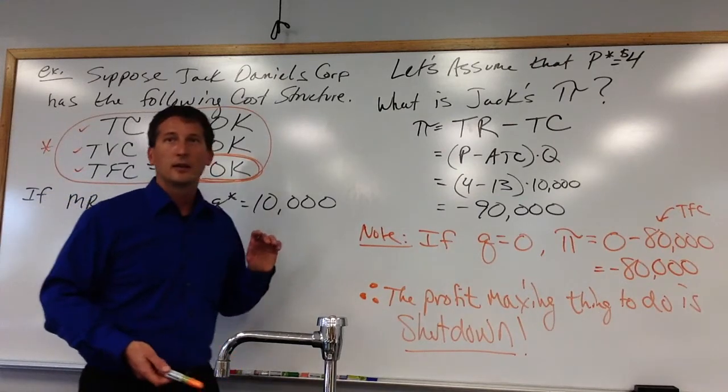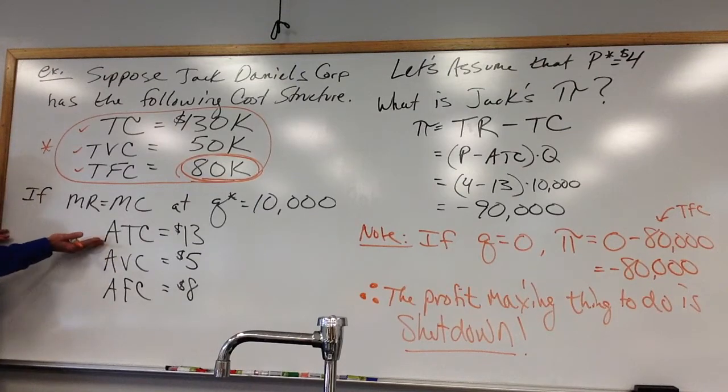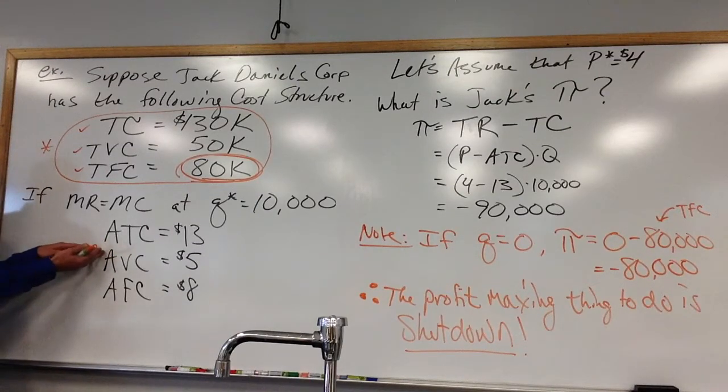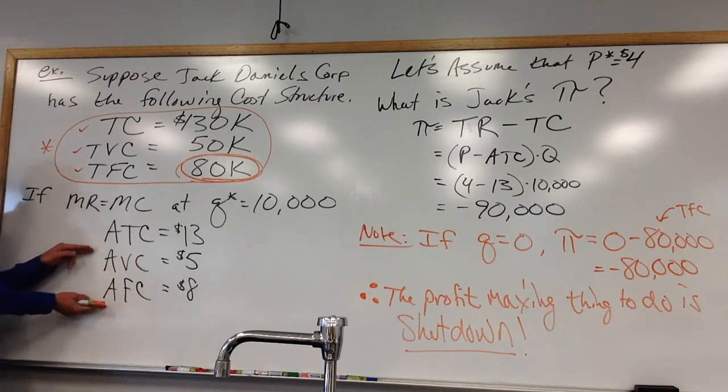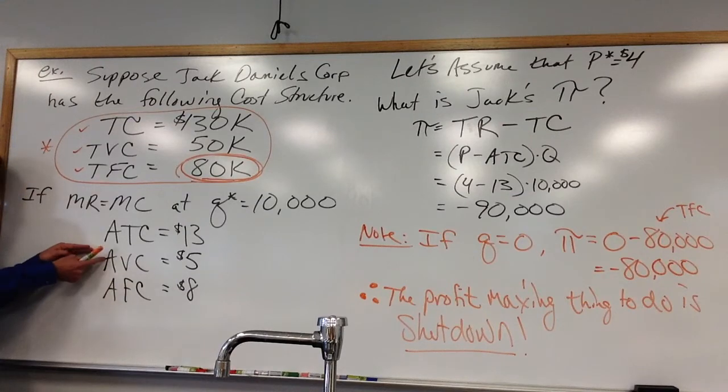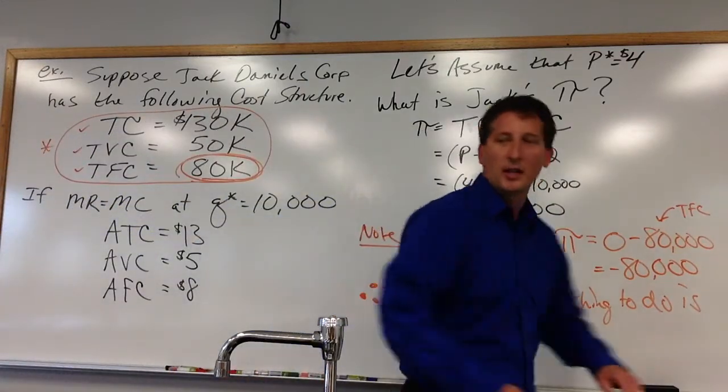That is the critical point, right? Because if he's at six, now think about what he's doing. He's covering all of his average variable costs and at least a little bit of the rent. He's covering all of his variable costs and a little bit of the rent. So this is kind of the magic number called the shutdown price. We have to get at least our average variable costs to justify opening up and producing something. That's what we're doing here with this shutdown business.